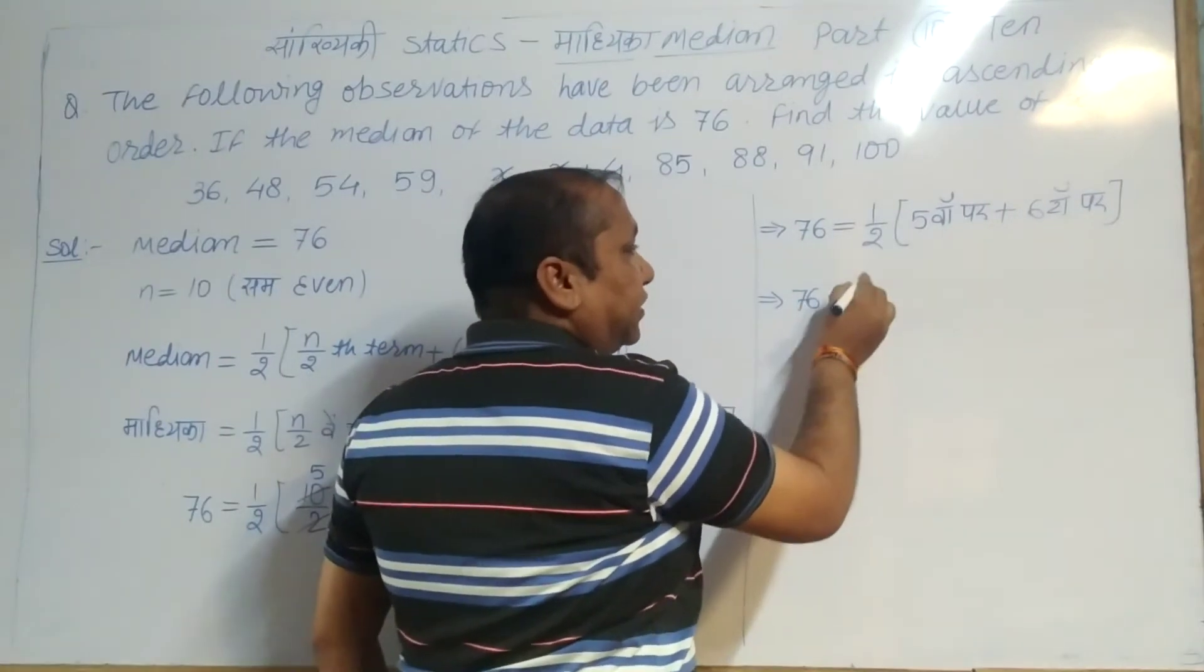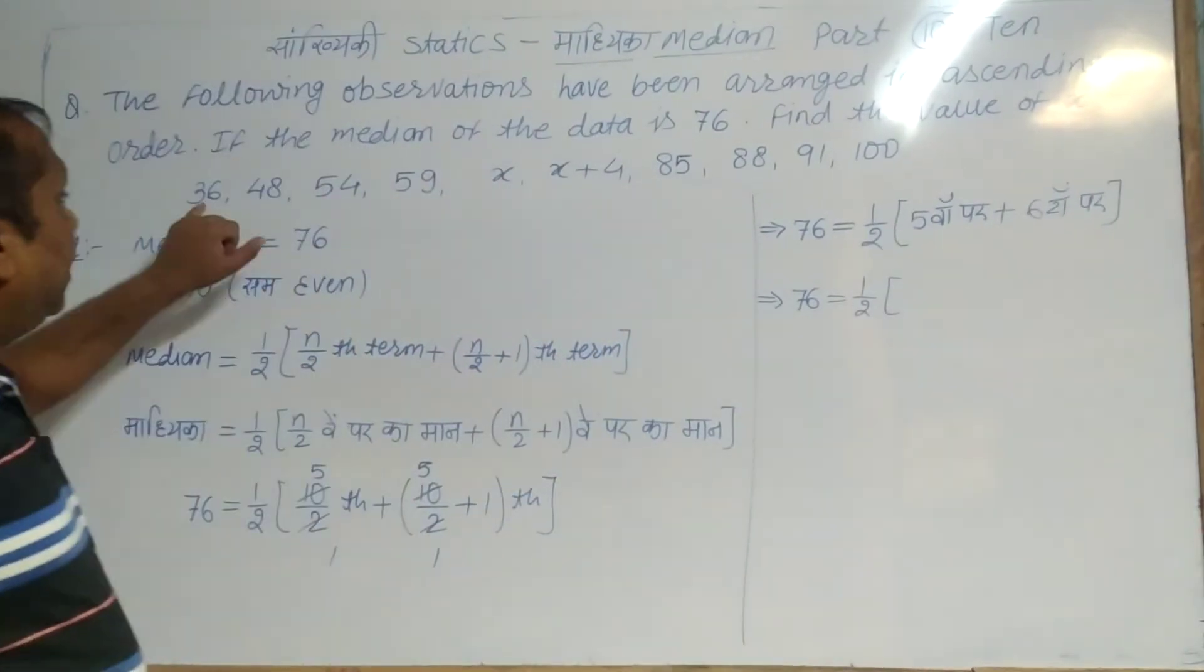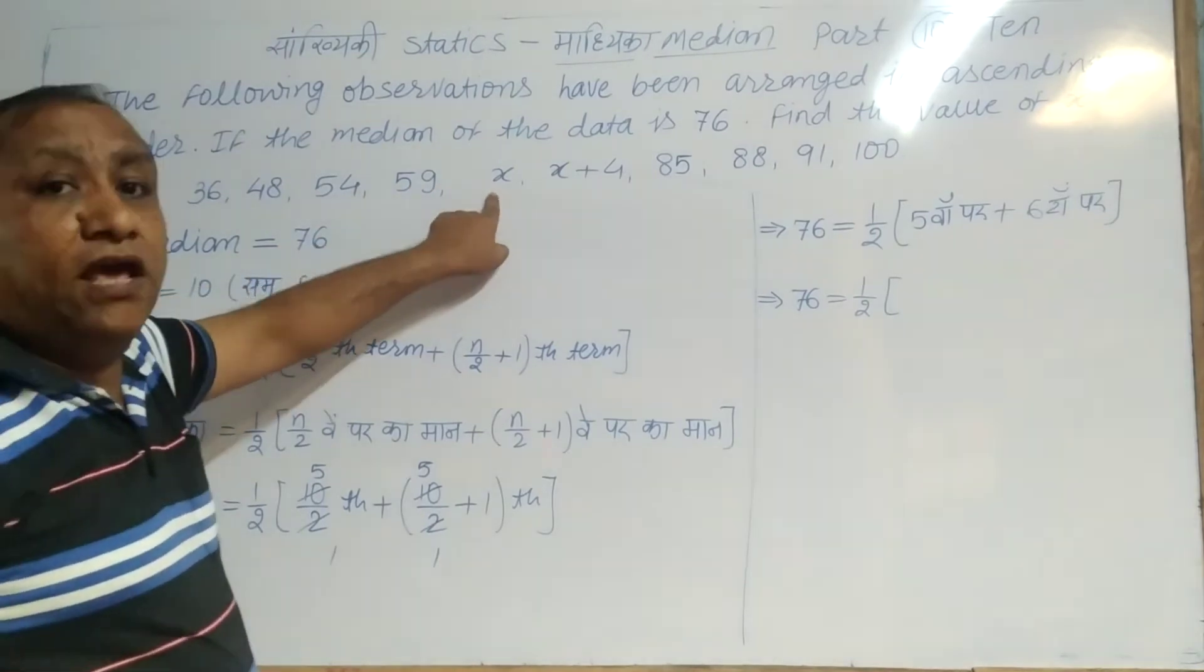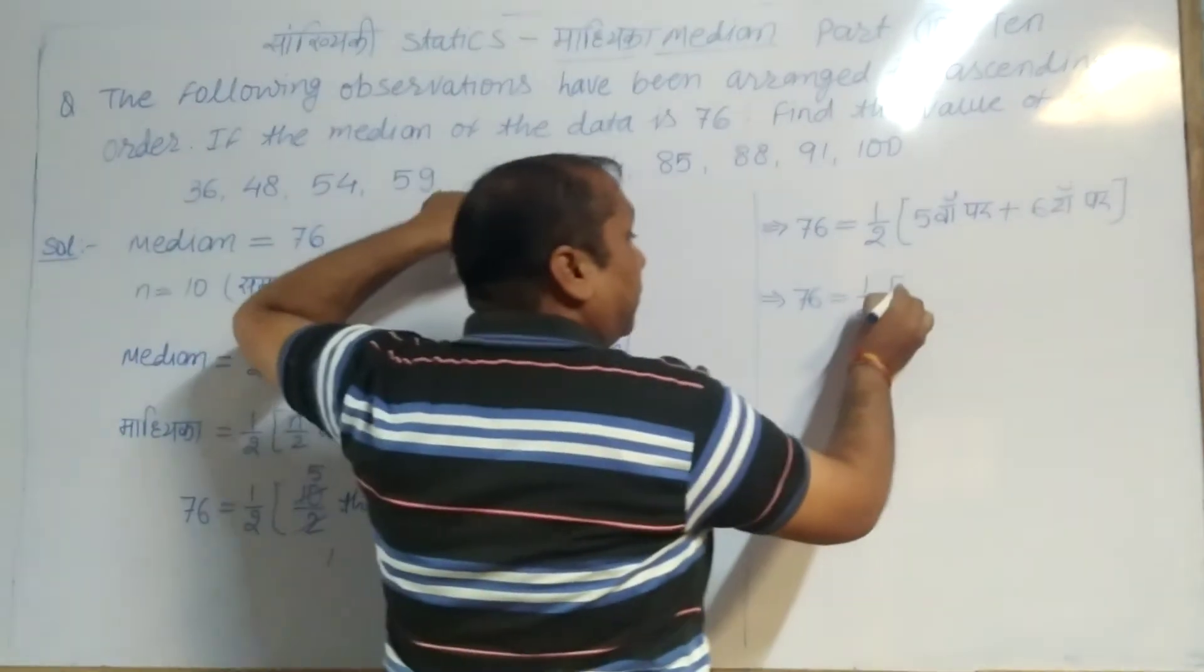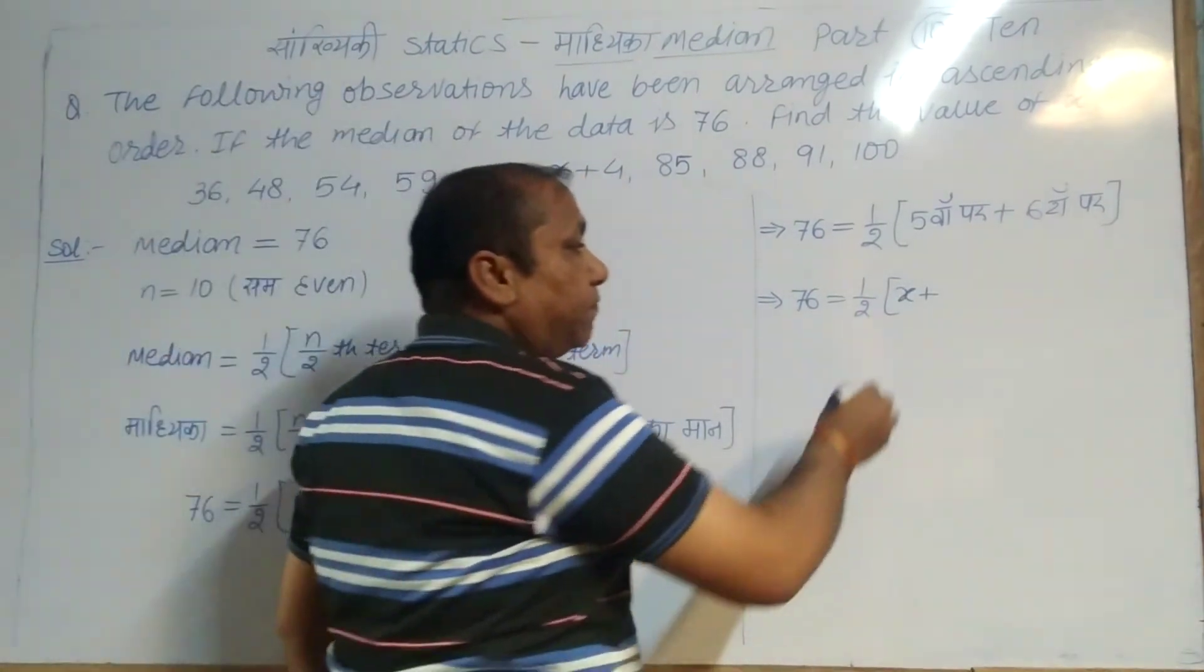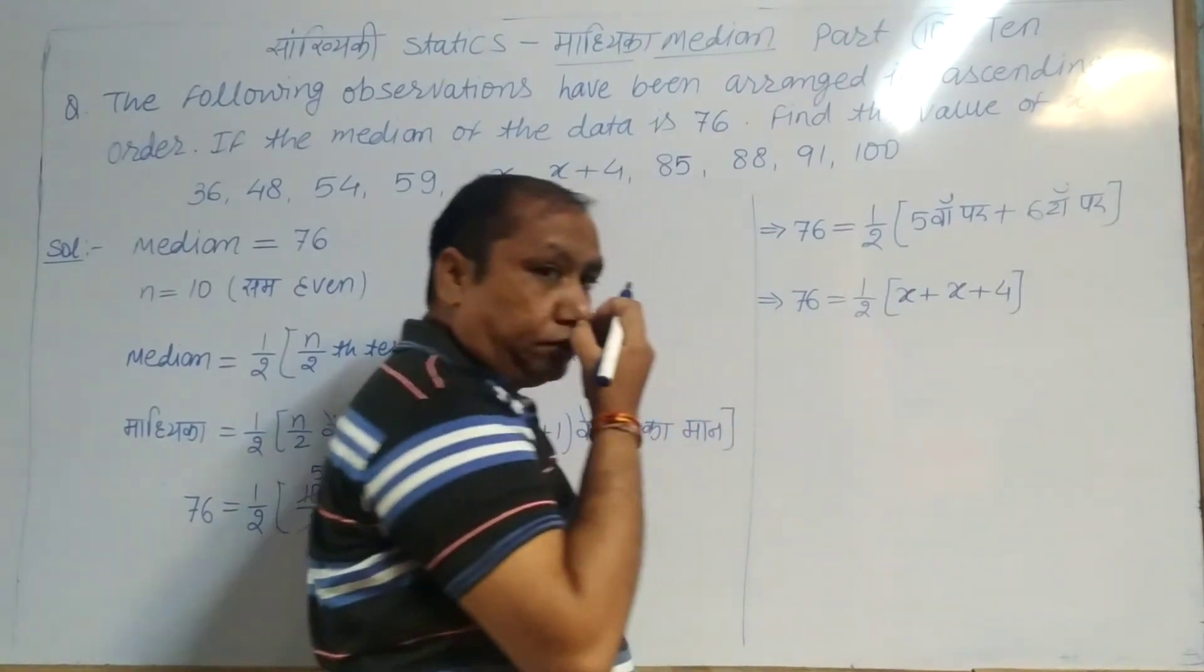The 5th term, counting 1, 2, 3, 4, 5, is x, and the 6th term is x plus 4.